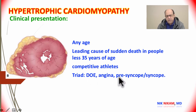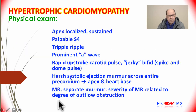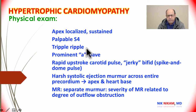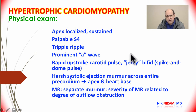The main symptoms include dyspnea on exertion, angina, and presyncope or syncope. On physical examination, we may localize a sustained apical impulse, and may feel a palpable S4 due to a prominent atrial kick. These two combined can give what is called a triple ripple at the left ventricular apex. Prominent A waves may also be seen. The carotid pulse may reveal a rapid upstroke followed by a second upstroke, known as the bifid spike.